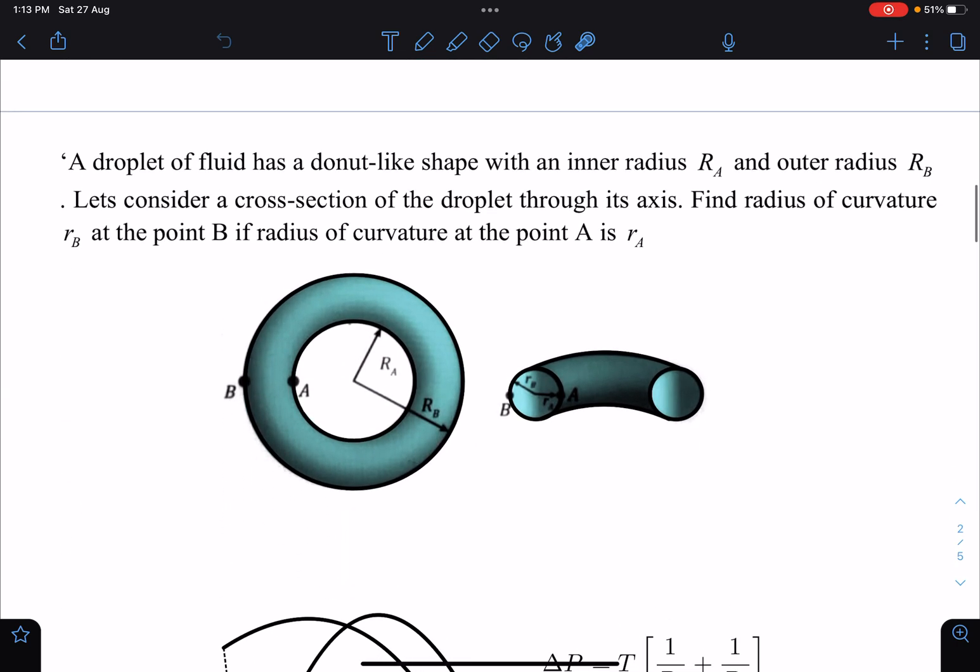A droplet of fluid has a donut-like shape with an inner radius R_A, so this radius is given as R_A, and outer radius is R_B. Let's consider a cross-section of the droplet through its axis. Find the radius of curvature r_B at point B if the radius of curvature at point A is r_A.